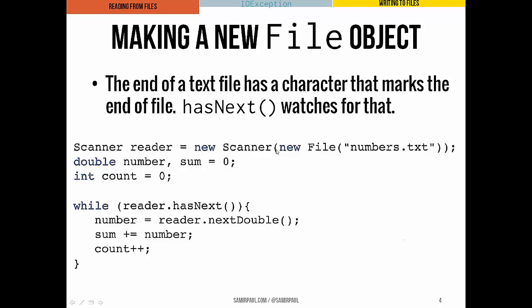In this example, we make a new Scanner and we're looking at numbers.txt — that's the file we're opening. We declare some doubles: a double called number, a sum which we start off at zero, and an int called count which we start at zero. While reader.hasNext — in other words, while we haven't yet reached the end-of-file character — we want to read the next double, add it to sum, and iterate our counter. That happens as long as reader.hasNext returns true, meaning we haven't hit that end-of-file character.